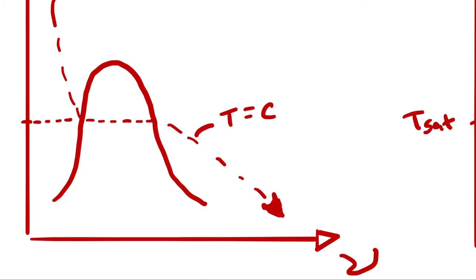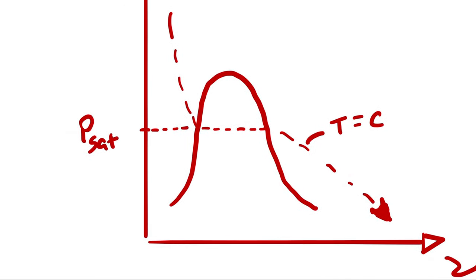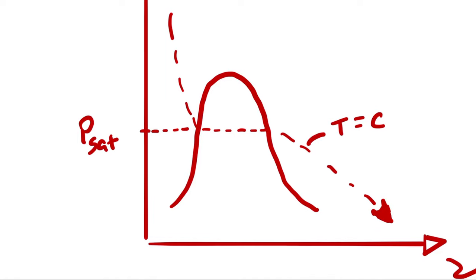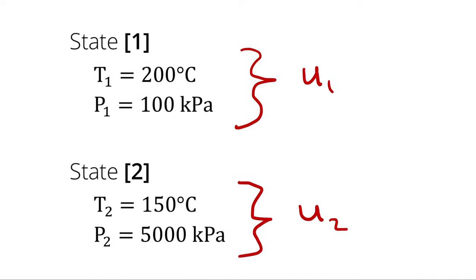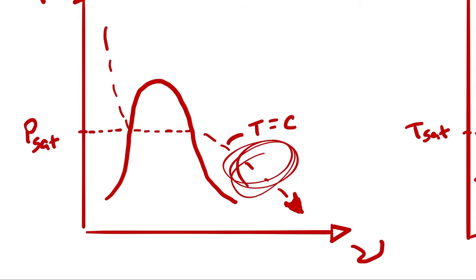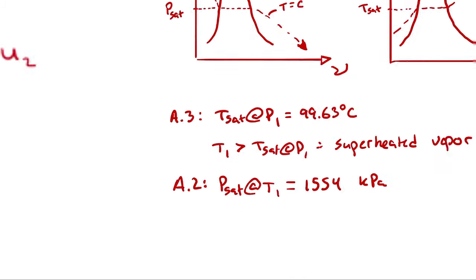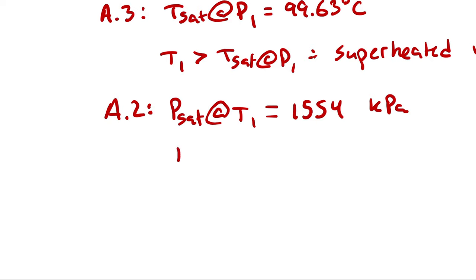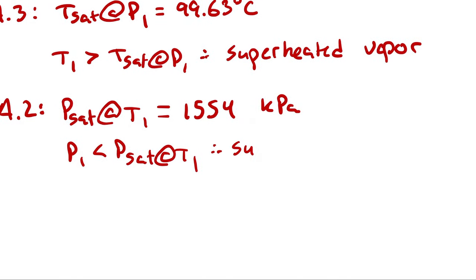That means for a line of constant temperature representing 200 degrees Celsius, the saturation pressure occurs at 1554 kilopascals. Our pressure of 100 kilopascals is lower than that, which means we are in the superheated vapor region — the region to the right of the saturation dome. Therefore, P1 is less than P_sat at T1, and we have a superheated vapor. Either route would have worked.